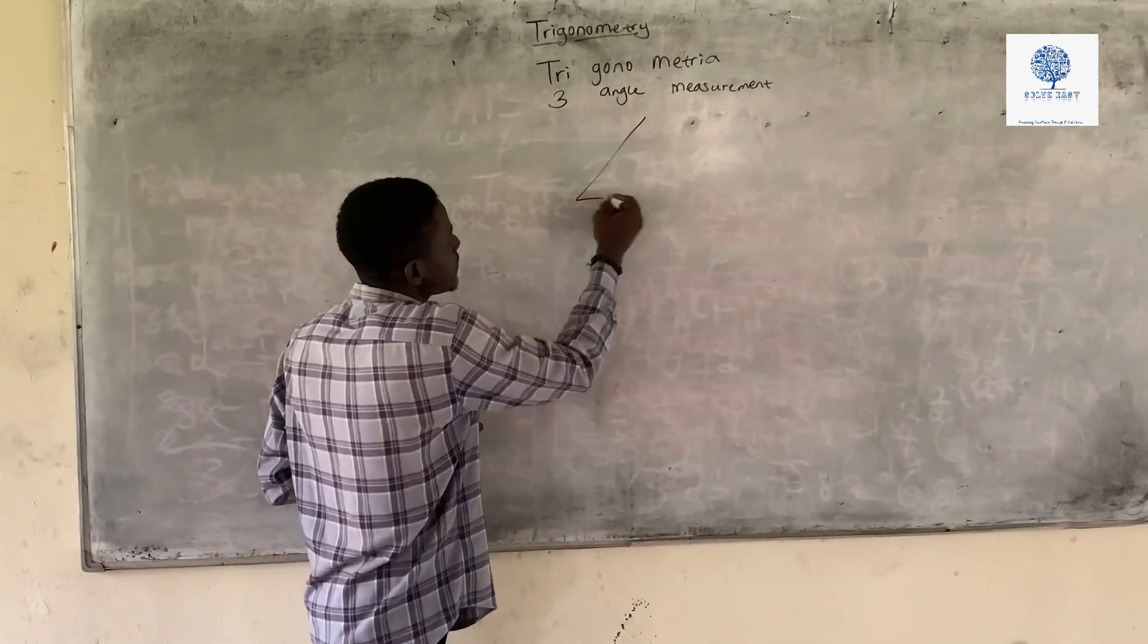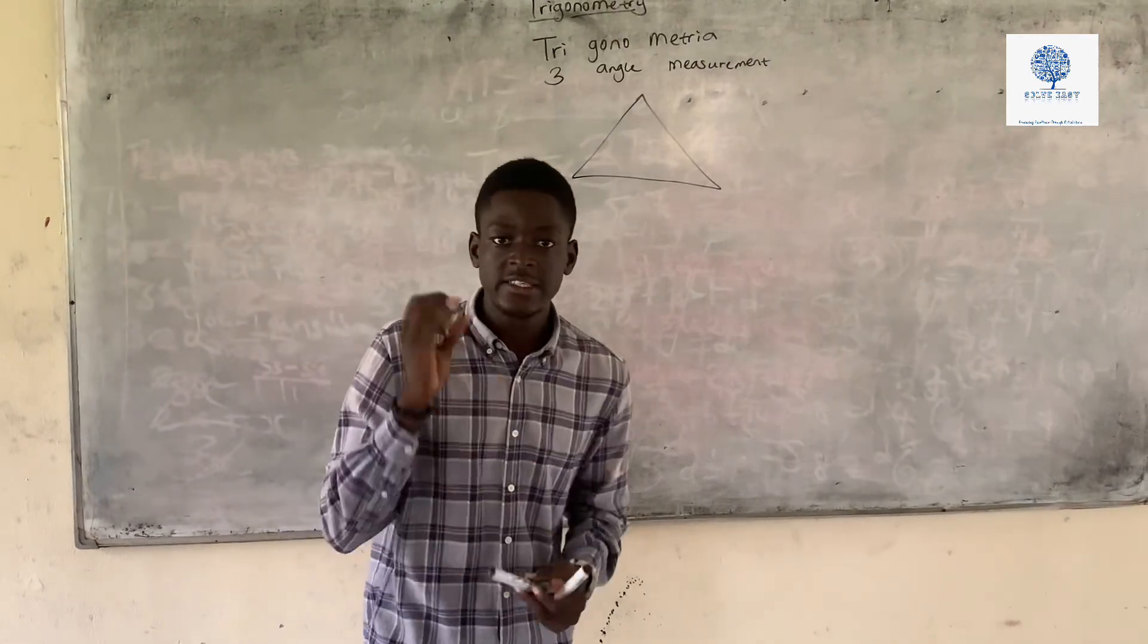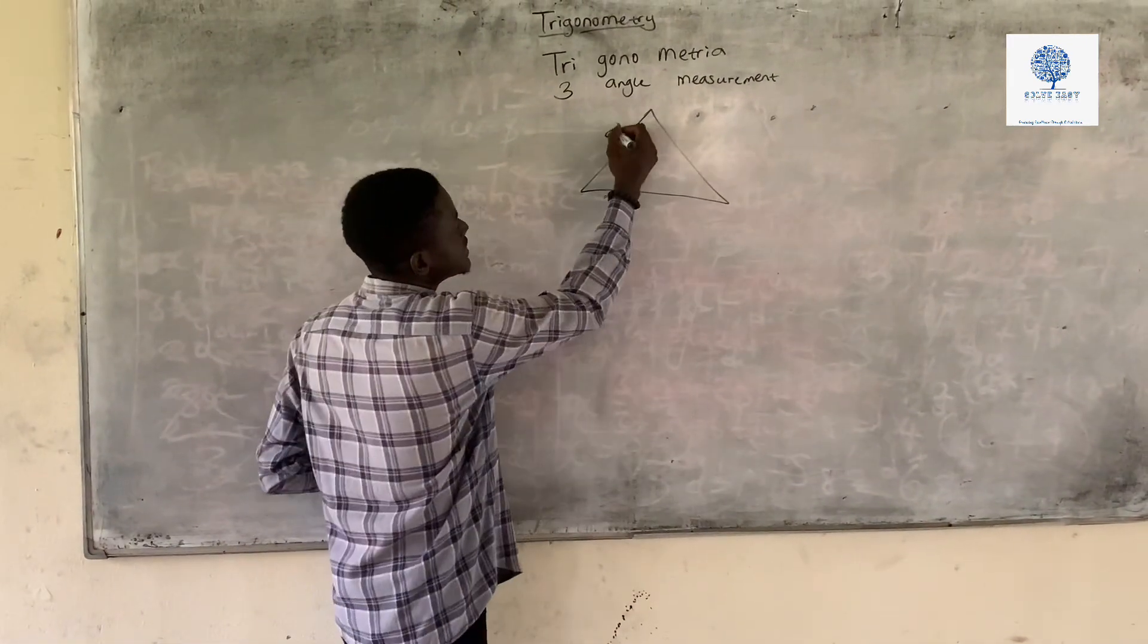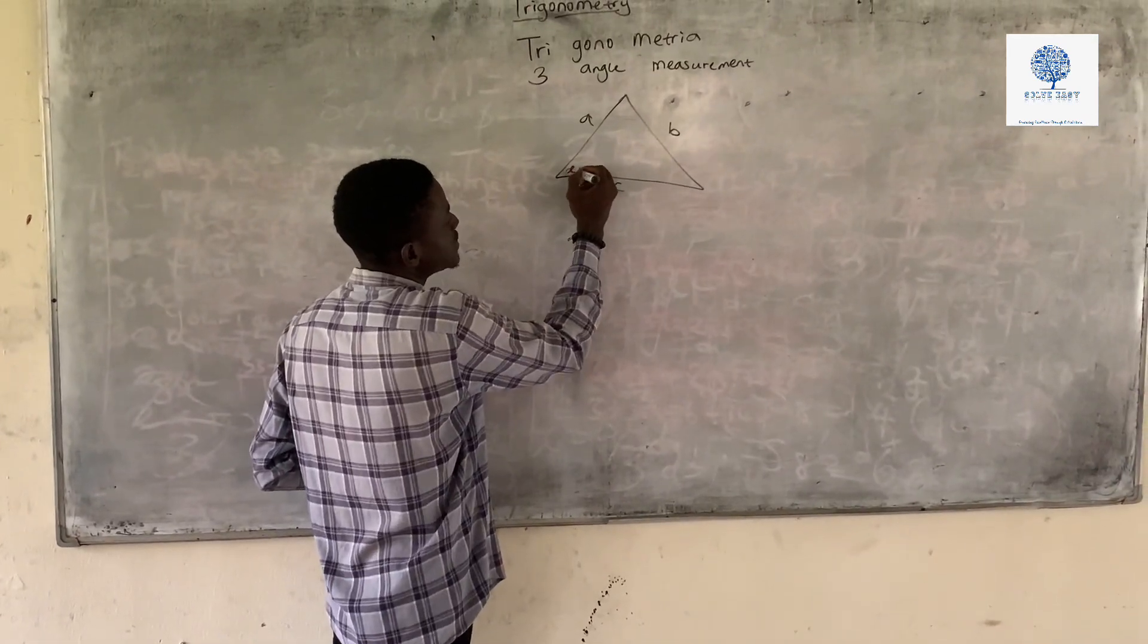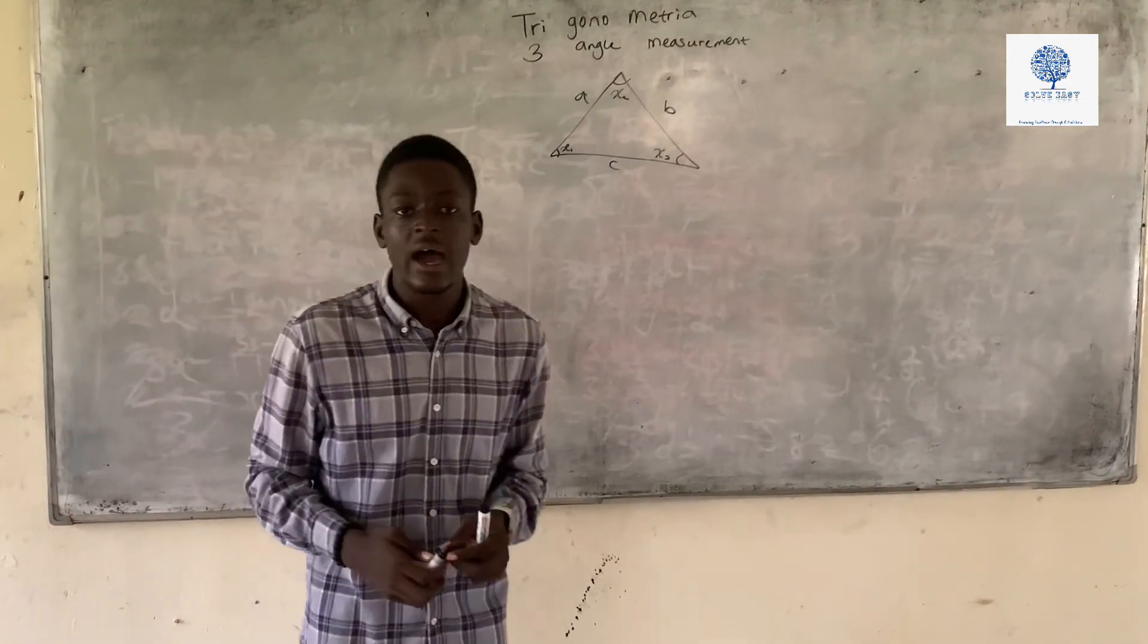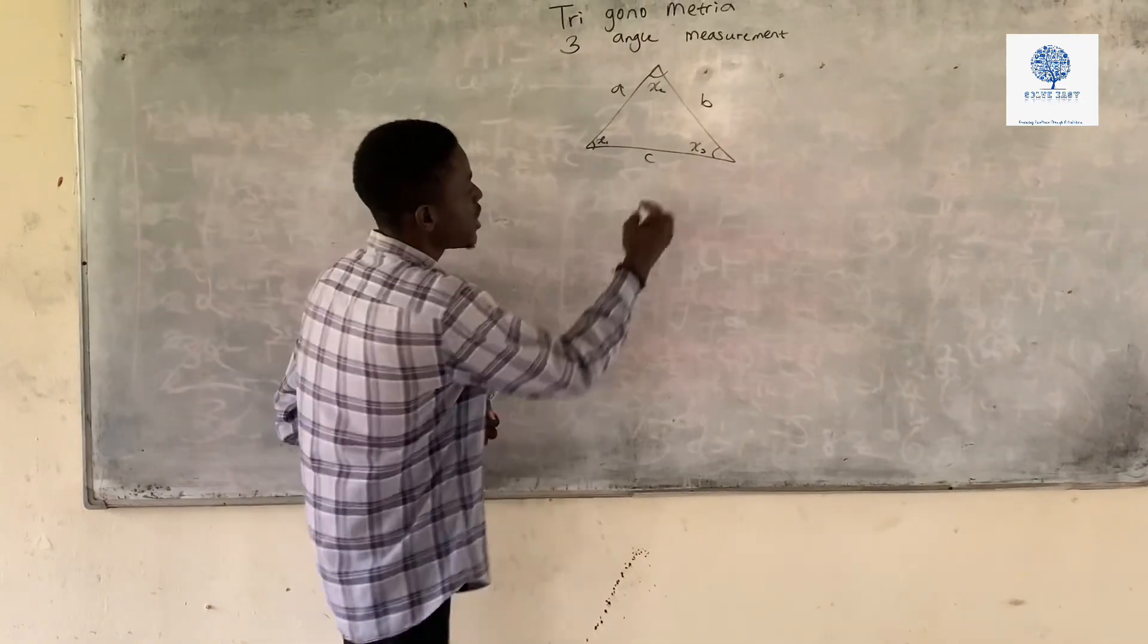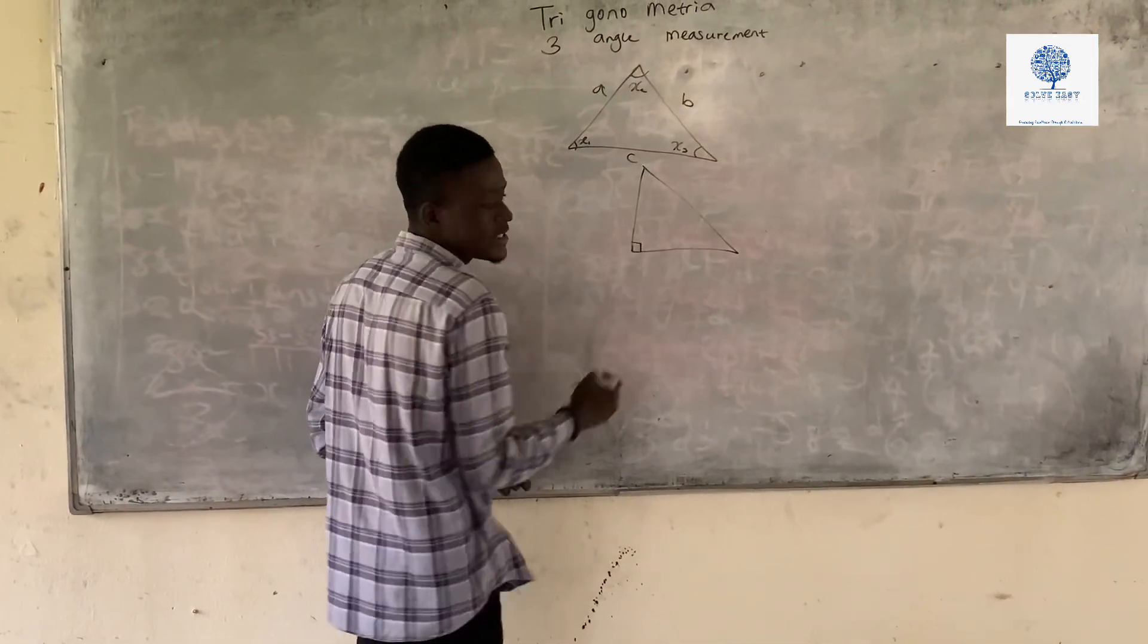And as such if we have the triangles like this, this triangle has 3 sides and also has 3 angles. This being the 3 sides A, B and C and then we have 3 angles X1, X2 and X3. So this is usually how these triangles are made and if we have the right angle triangle like this, such that here is 90 degrees.